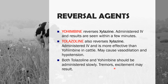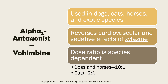Tremors and excitement may result if slow IV administration is not followed. Aside from cattle, yohimbine is also used in dogs, cats, horses, and exotic species. It reverses the cardiovascular and sedative effects of xylazine. The dose ratio is species-dependent.